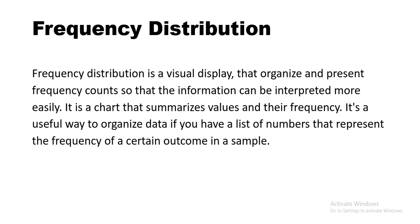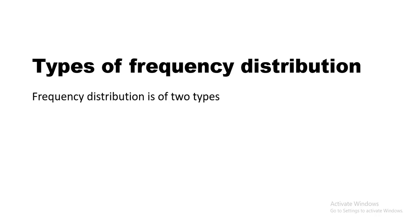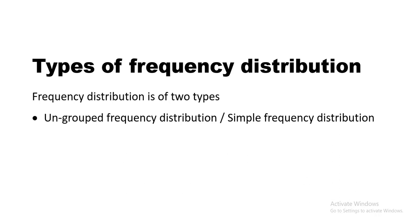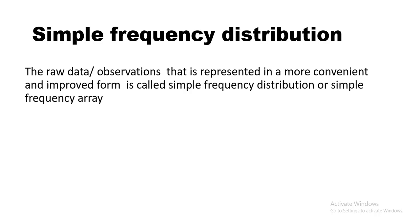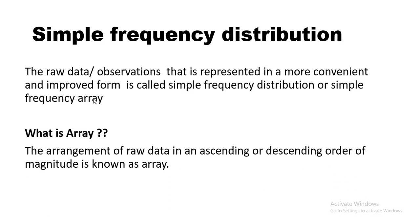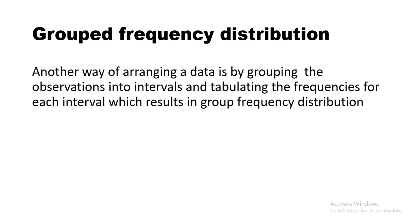It is a useful way to organize data if you have a list of numbers representing the frequency of a certain outcome in a sample. There are two types of frequency distribution: ungrouped or simple frequency distribution, and grouped frequency distribution. Simple frequency distribution, also called a simple frequency array, presents raw observations in a more convenient form arranged in ascending or descending order of magnitude.